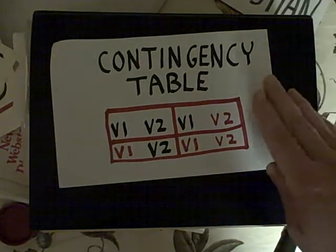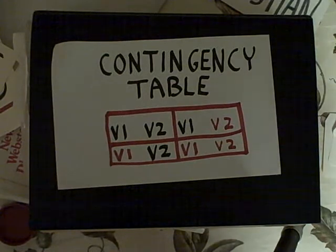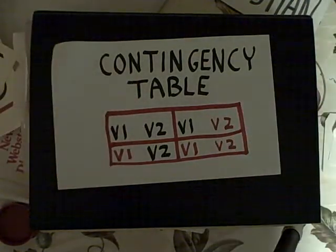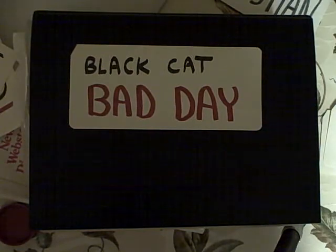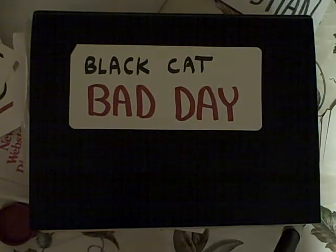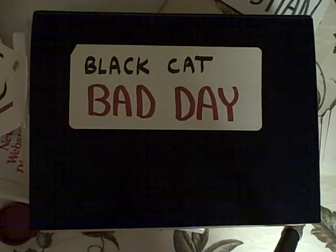One of the ways we can establish this correlation with our systematic observations is to construct some kind of contingency table where we look at two variables and try to see what is the relationship between those two variables in all of the cases that we observe. Now if we only observe the situation where a black cat crossed somebody's path and that person had a bad day, we don't have two variables — we're only looking at days in which the cat was present, so that's a constant. And we only look at the days where the person had a bad day, so the quality of the day is also a constant. If we want to establish a correlation between the occurrence of a black cat crossing your path and having a bad day, we've got to establish a contingency table between those two variables.